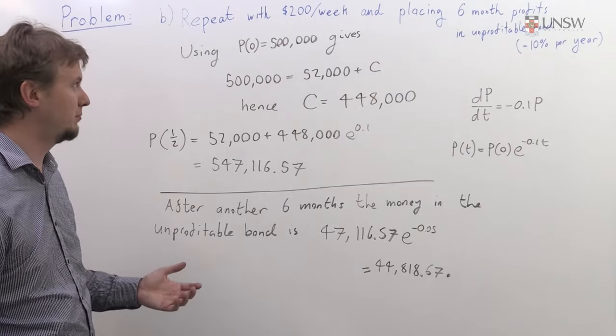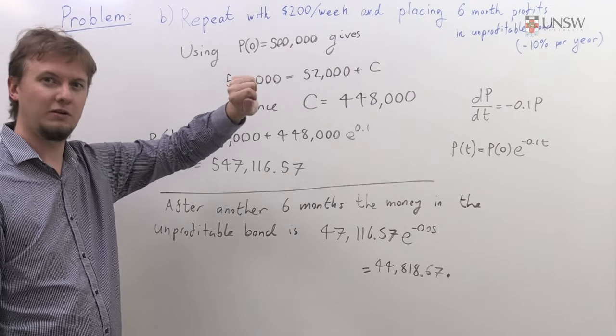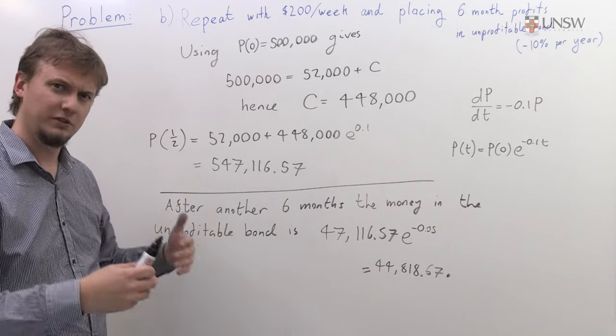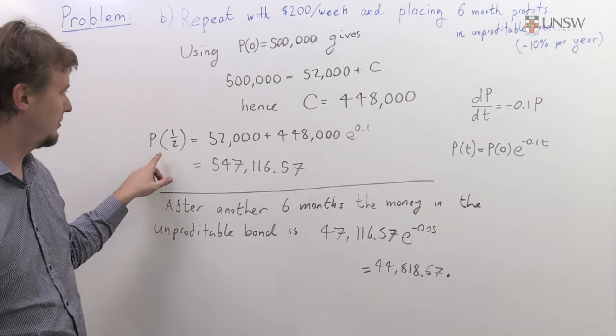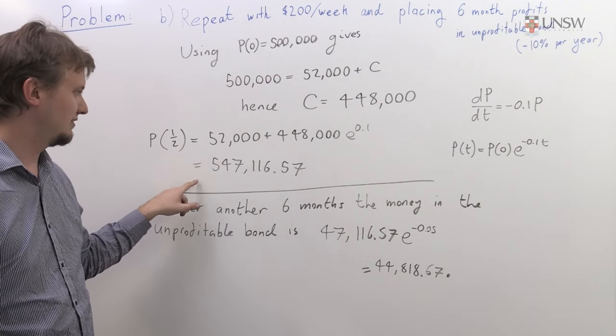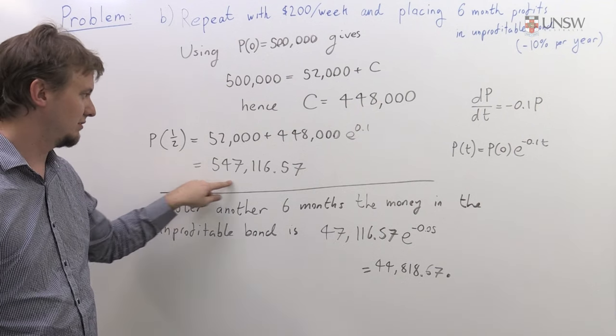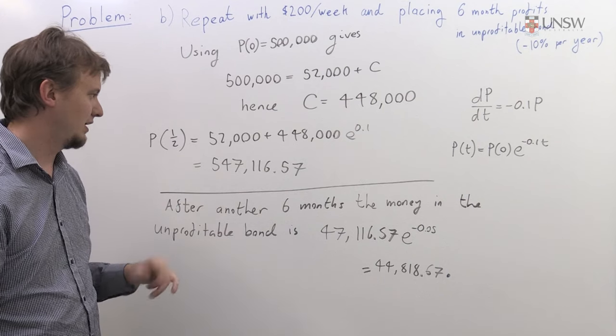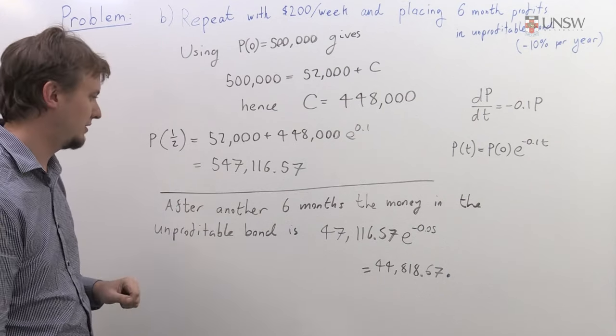If we take away all that profit from the bond, we're just going to be left with that original half million in there. If we run forward six months again, that's the same as what's going to happen in the first six months. So after the second six months, that bond will have the same amount we have here, just that $547,000.